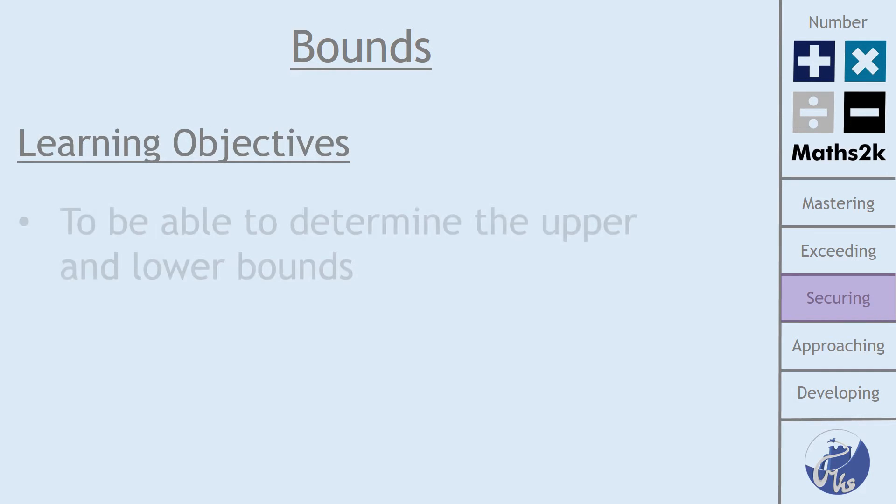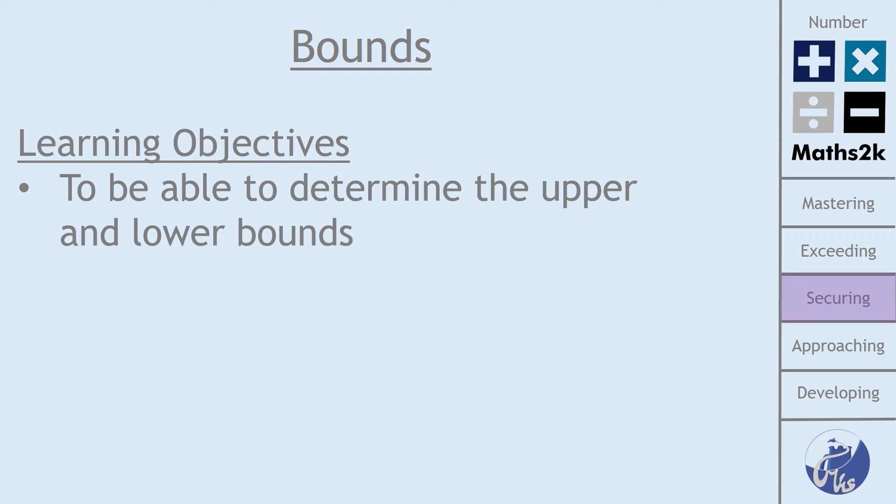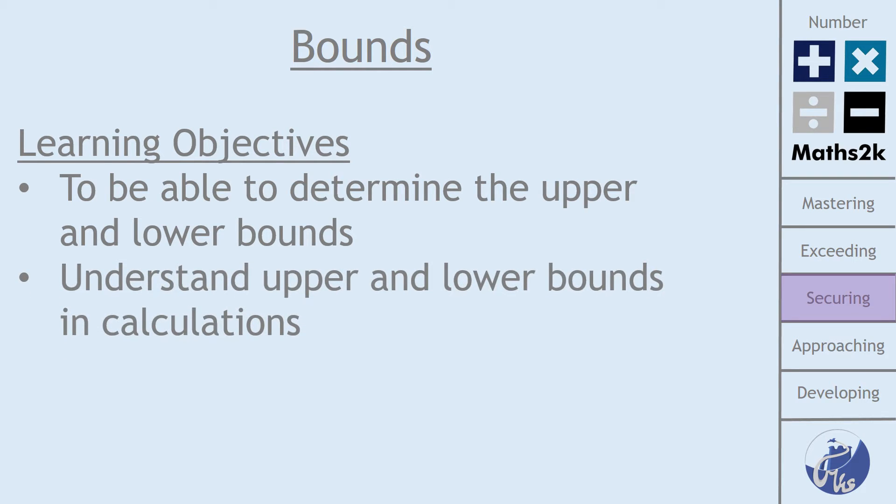So the first thing which I'm going to go through is making sure that you're able to find or determine the upper and lower bounds for a given number depending on how it's been rounded. And the second thing that I'm going to go through is making sure you understand upper and lower bounds in calculations which can be a slightly trickier idea and it doesn't always follow what you think is going to happen.